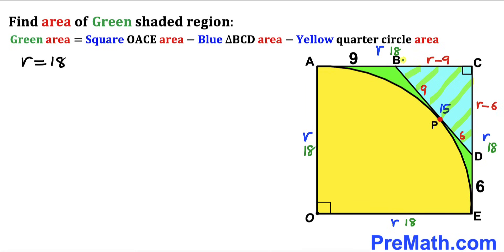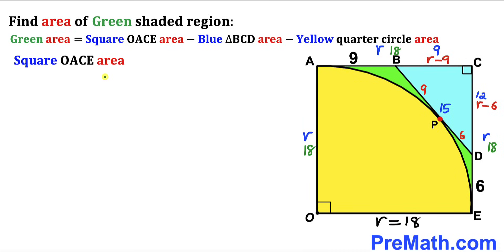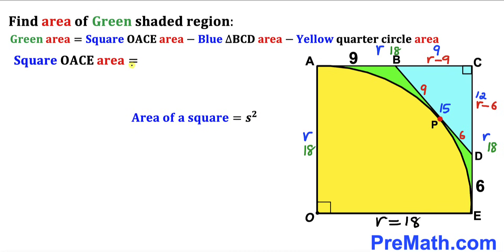With r = 18: BC = 18 − 9 = 9 units, and CD = 18 − 6 = 12 units. Now we calculate the area of square OACE using area = s². With side length 18, the area is 18² = 324 square units.